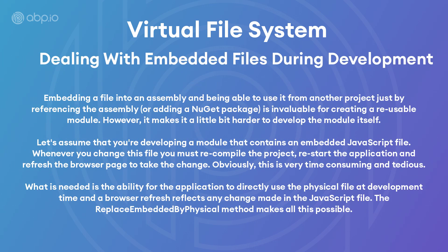Embedding a file into an assembly and being able to use it from another project just by referencing the assembly or the NuGet package is invaluable for creating a reusable module. However, it makes it a little harder to develop the module itself. Assuming you're developing a module that contains an embedded JavaScript file, whenever you change this file, you must recompile the project, restart the application, and refresh the browser page just to see the change — which is very time consuming and tedious.